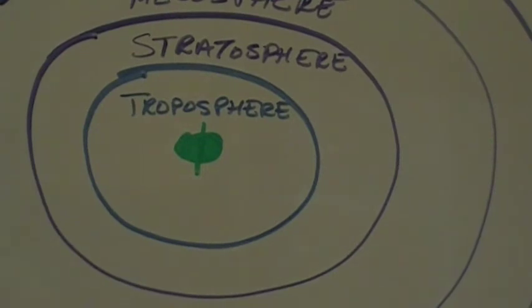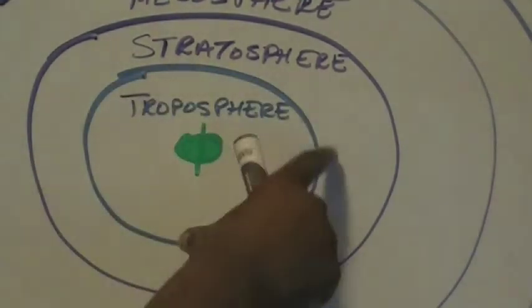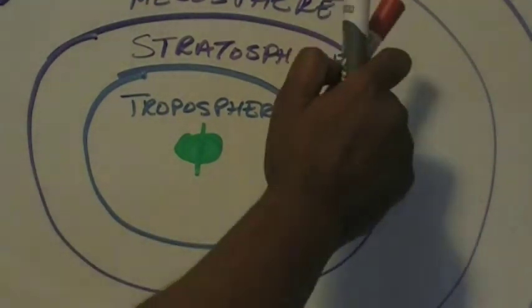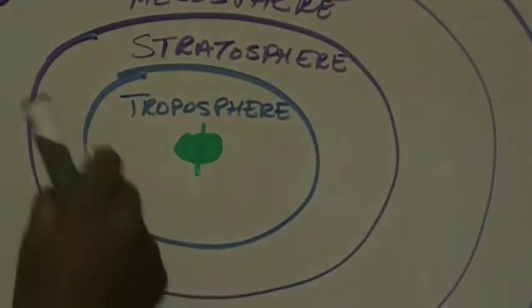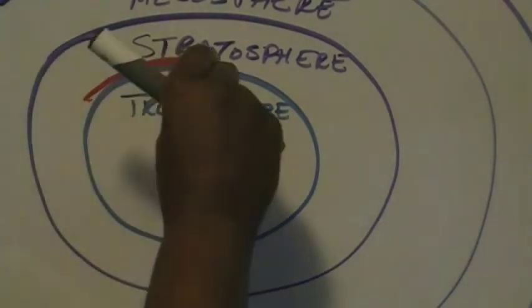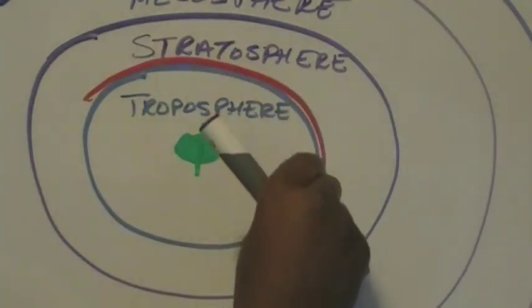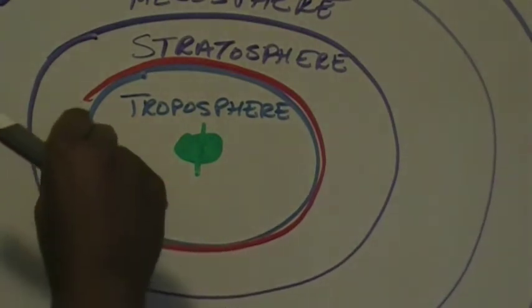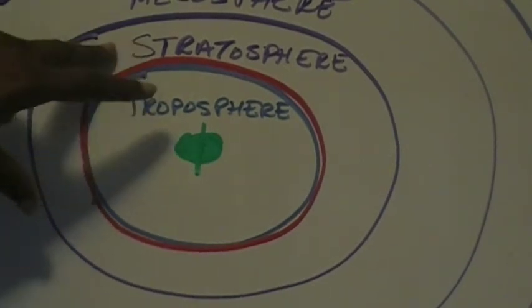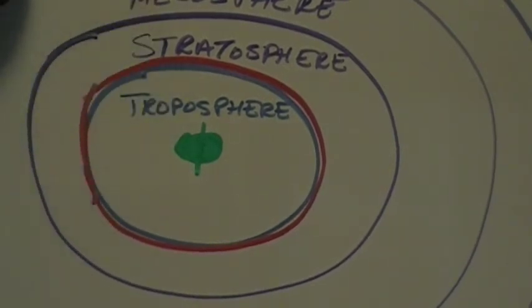In our troposphere we have a tropopause, and there's also a stratopause and mesopause, but here we're going to focus on just the tropopause when we talk about pauses. That red line is the tropopause, followed by the stratosphere, mesosphere, thermosphere, and outer space.